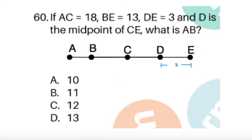Item 60: If AC equals 18, BE equals 13, DE equals 3, and D is the midpoint of CE, what is AB? Now in these types of examples, I suggest start with two points that are adjacent or consecutive. So it would be easier for us to start.